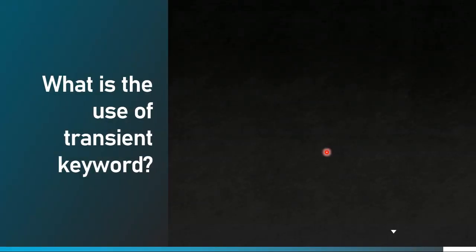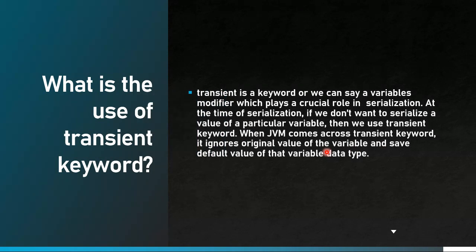Next question: what is the use of the transient keyword? Using the transient keyword, we restrict certain variables from taking part in serialization. If you want specific variables not to be serialized, use the transient keyword with those variables. There are scenarios where it is unethical to serialize specific data — for example, in healthcare, Personal Health Information (PHI) cannot be serialized. In those scenarios, we use transient to stop those values from being serialized.